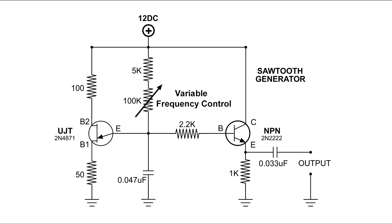When power is applied, the .047 microfarad capacitor starts charging through our resistors. And when it reaches the peak point voltage of that unijunction transistor, the transistor fires and through EV1, the 50 ohm resistor discharges that capacitor. When the capacitor is discharged, the unijunction transistor turns off and the cycle repeats.